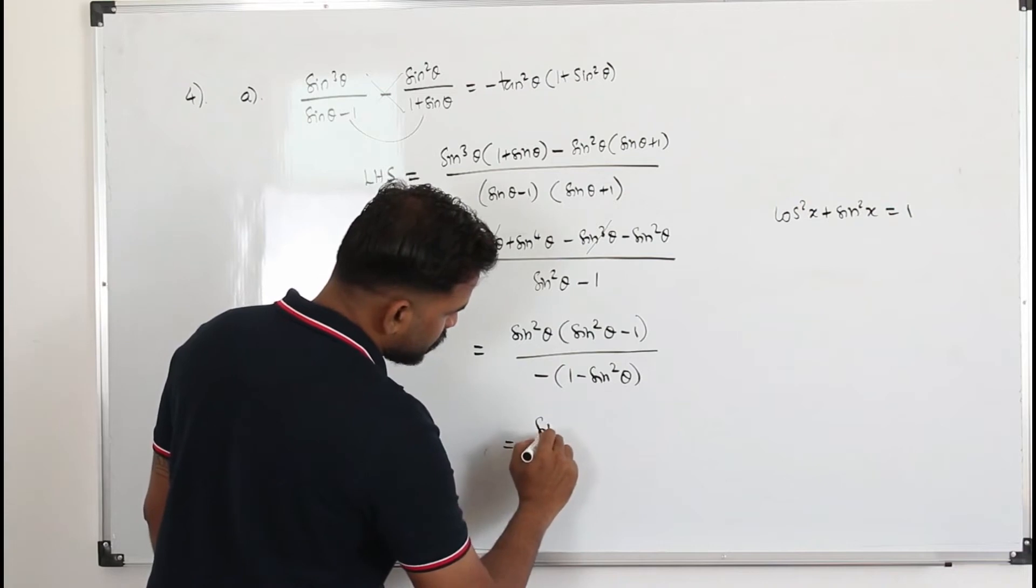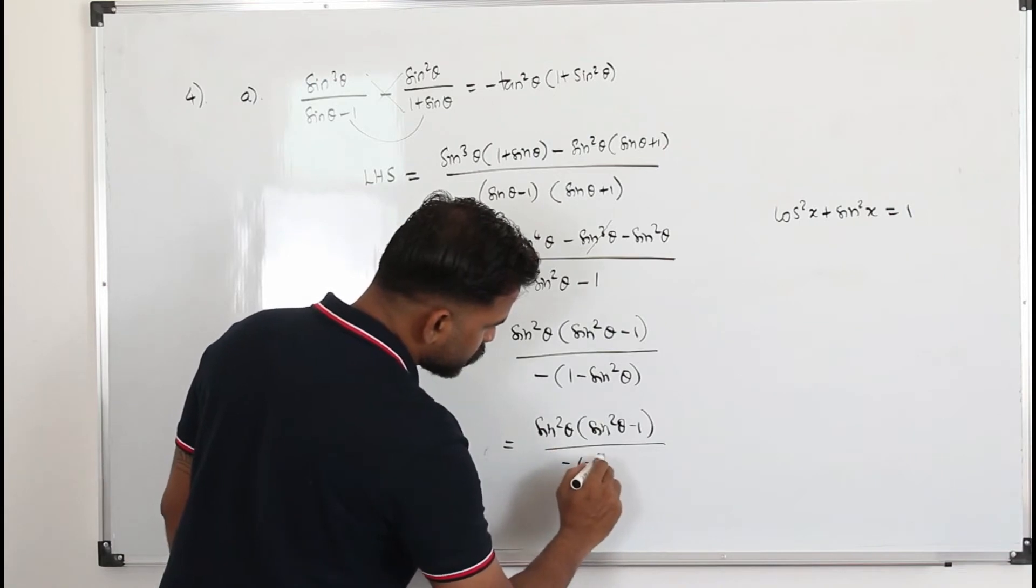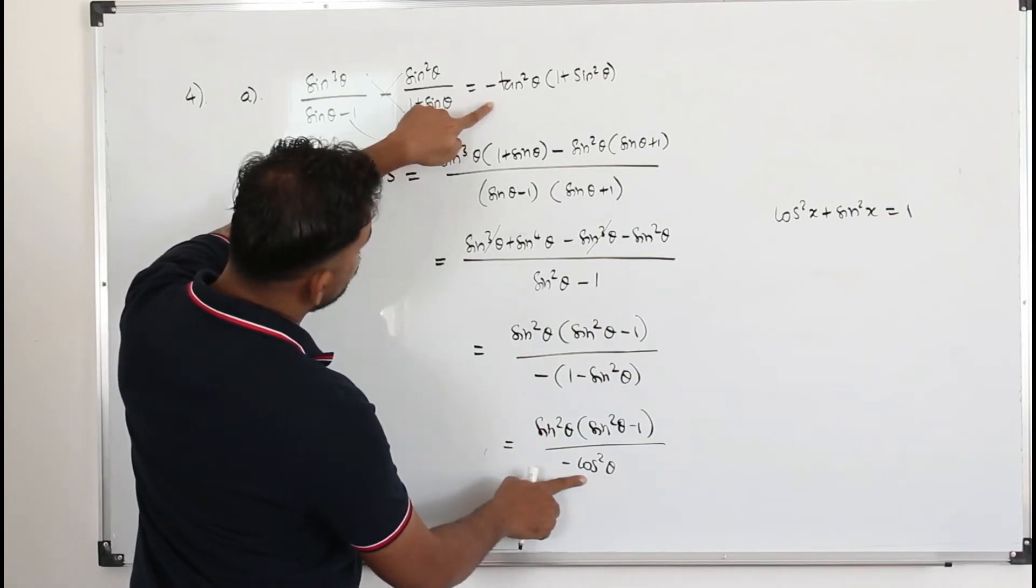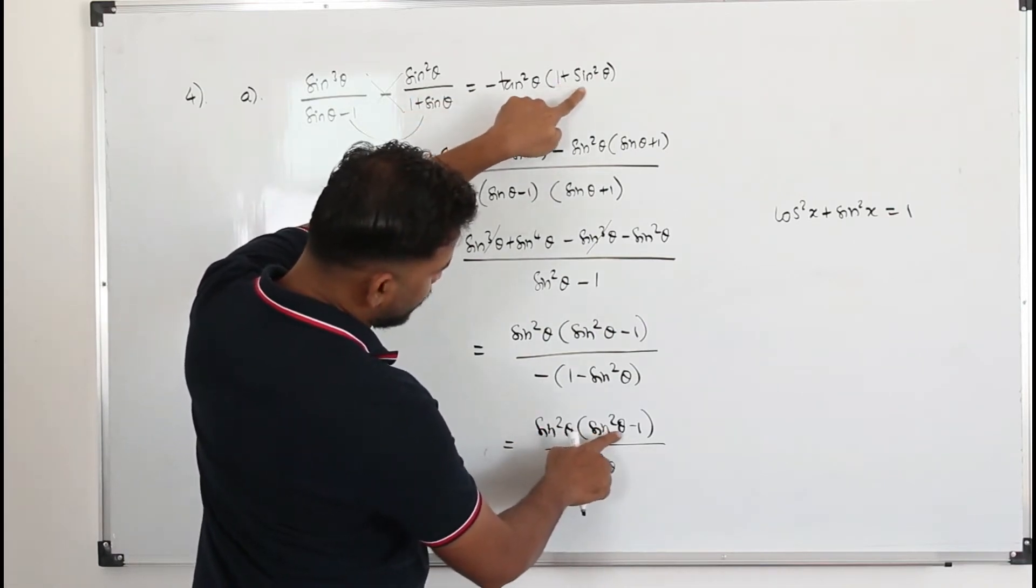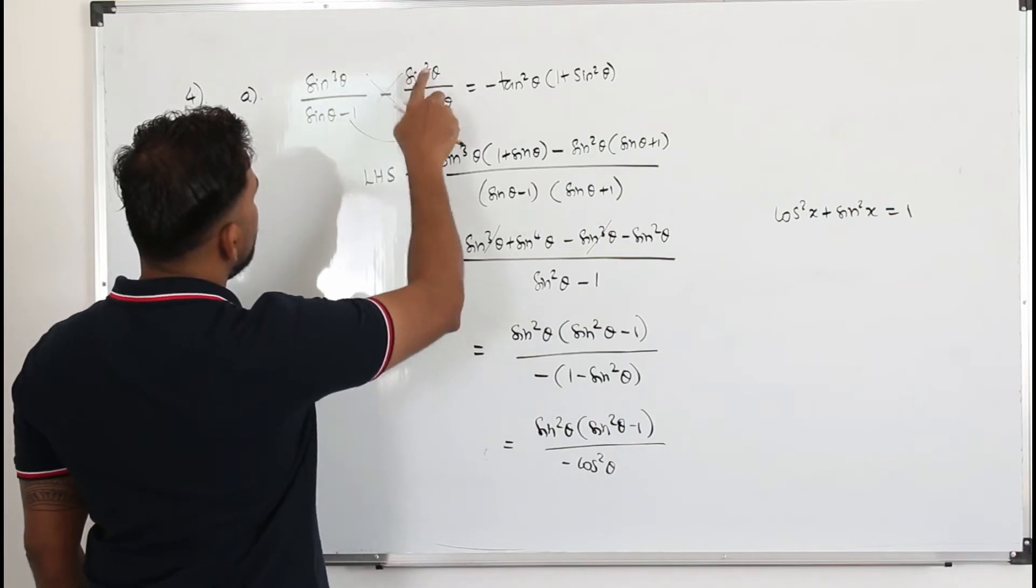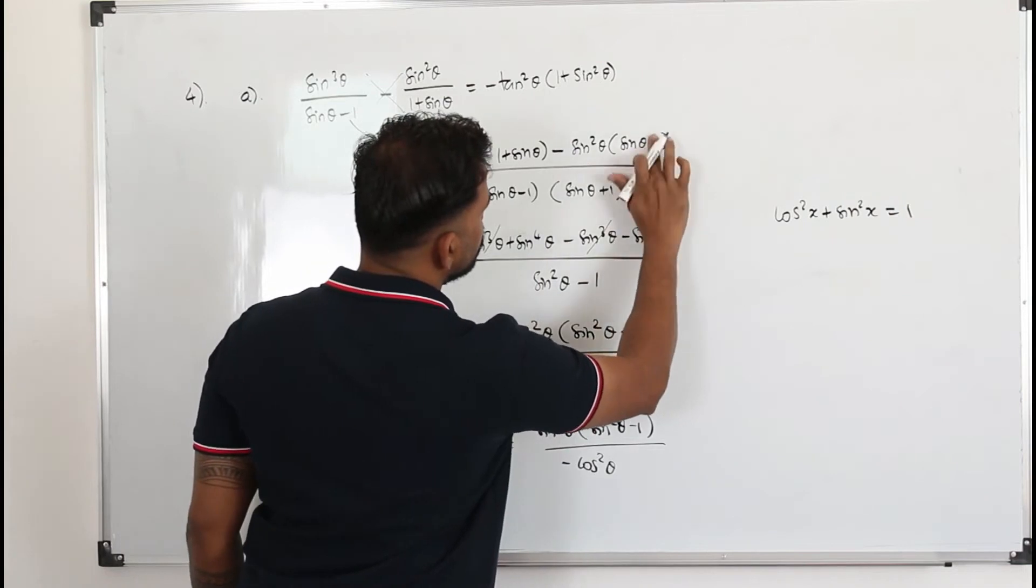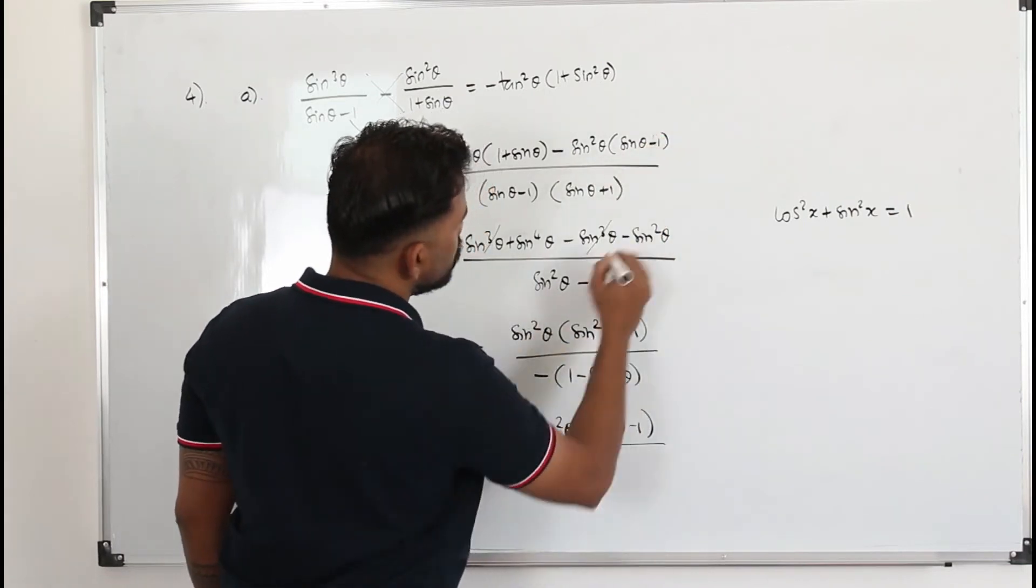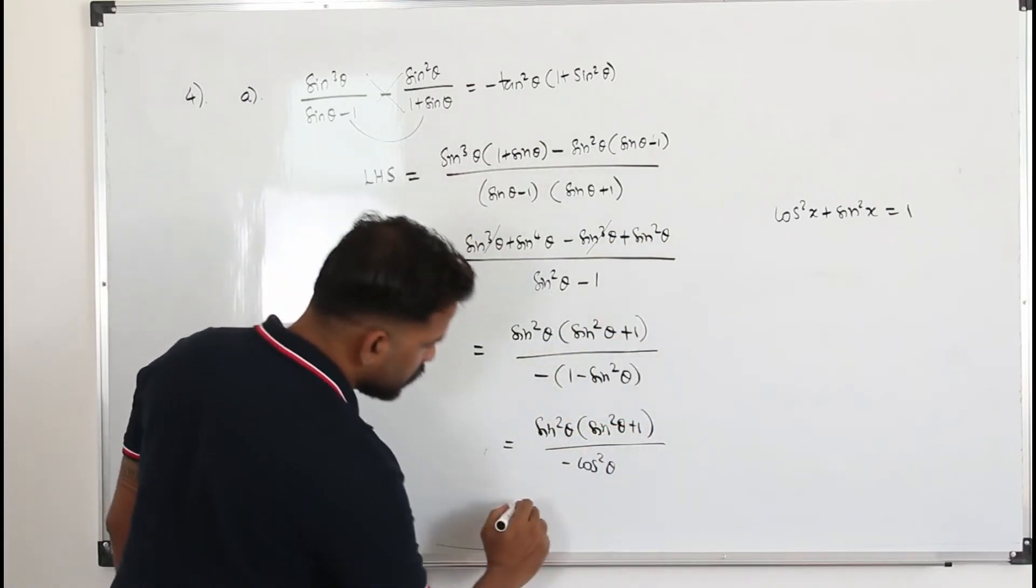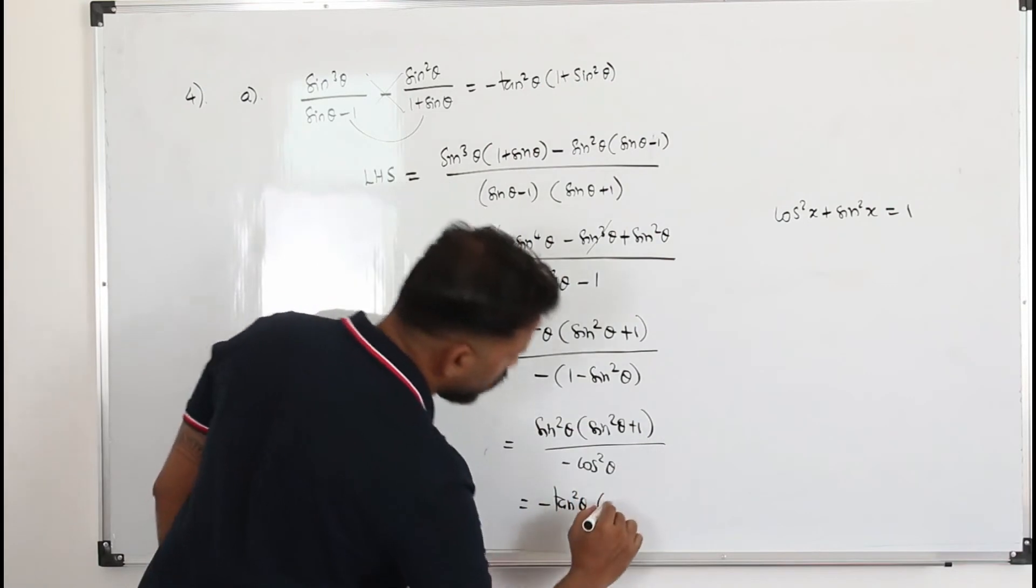So we have sin²θ times (sin²θ - 1) divided by -cos²θ. When you look at this, we have -sin²θ/cos²θ is tan²θ. We are supposed to get 1 + sin²θ, not sin²θ - 1. That means we missed out a negative sign. When we cross multiply, it has to be sinθ - 1, not sinθ + 1. So this should be minus 1. So you'll get plus here and this also is going to be plus. So -tan²θ times (sin²θ + 1) or (1 + sin²θ). That's all.